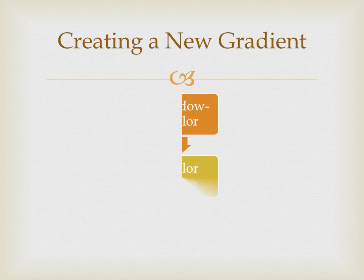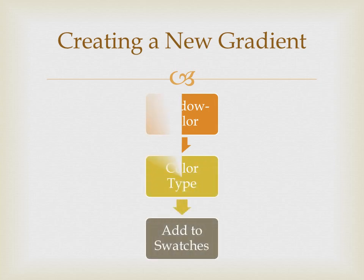Now, how to create a new gradient. First, select the object and click on the Window menu, then the Color option — the color panel appears. Now click on the color type drop-down list and choose either the linear or radial gradient.